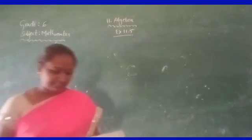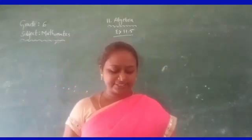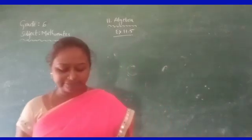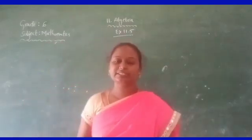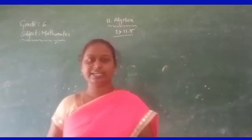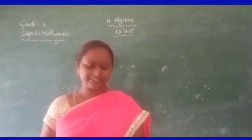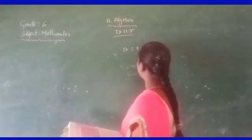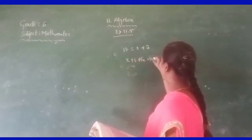Open your textbooks, see page number 214. First question: state each of the following — are these equations with a variable? Give reasons for your answer. Identify the variable from the equations. For example, 17 is equal to x plus 7. Does this equation have a variable? Yes. Here x is the variable.